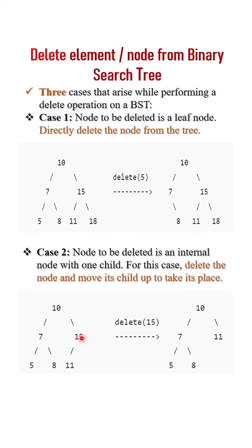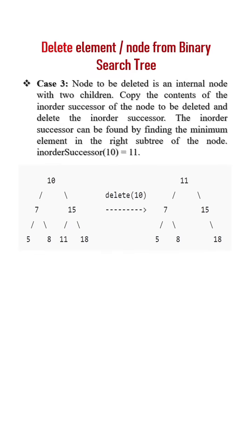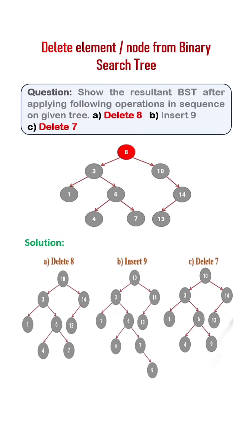So instead of 15, I simply write 11. Case three — the most important: if the node to be deleted has two children. For example, if I want to delete 10, which has two children — 7 and 15 — simply take the minimum value from the right subtree. The minimum value is 11; directly put it in place of 10.